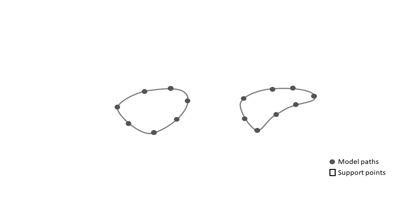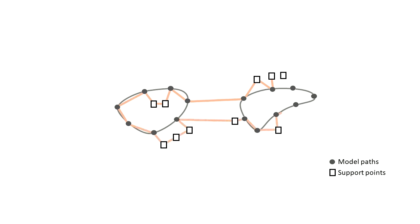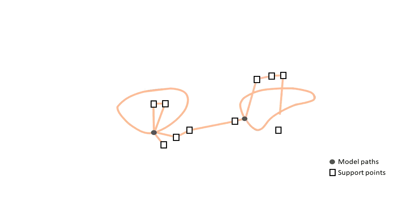For any given layer, we first generate a set of additional points so as to provide sufficient support for the layer above. We then compute a short, continuous path that passes through all the model points and all the support points. Using a shortest Hamiltonian path algorithm on this set of points, the resulting path will generally not follow the model path continuously, which leads to unacceptable print quality. To avoid this problem, we represent model paths using a single connection point that we pass to the shortest path solver. The resulting path allows us to branch out at connection points and print the cyclic model path as one continuous segment.